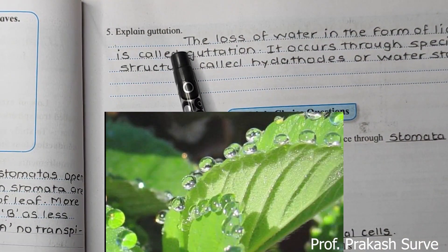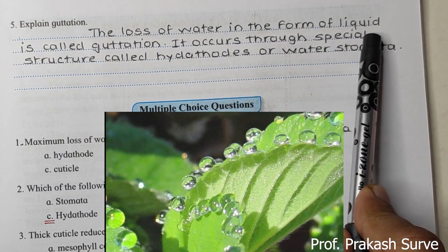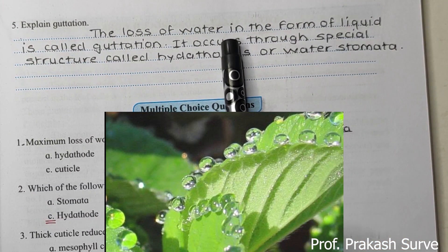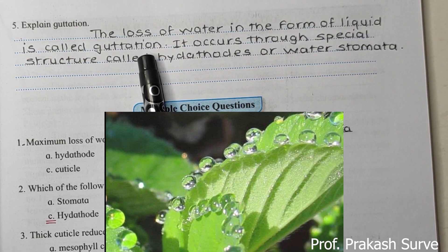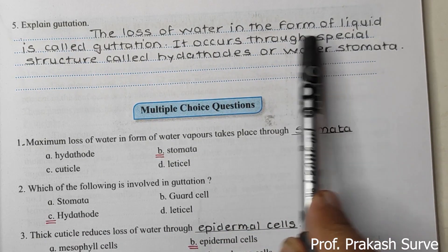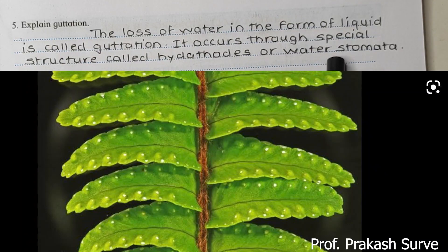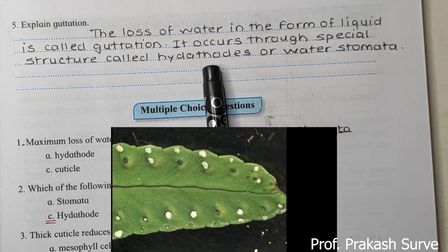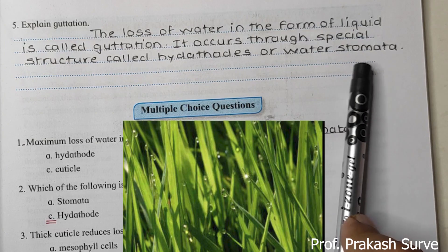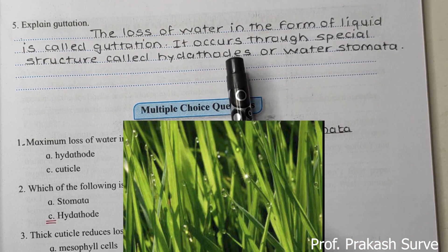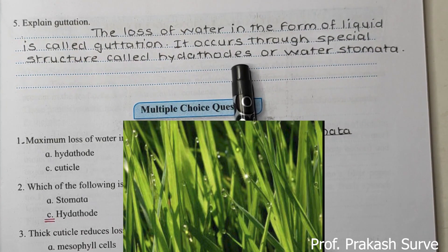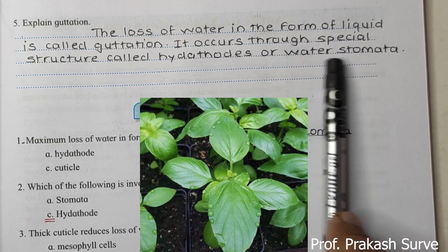What is guttation? Loss of water in the form of liquid is called guttation. It occurs through special structures called hydathodes or water stomata. Hydathodes can be observed on fern leaflets and pinnets. Water stomatas are observed on most grasses — the small droplets seen on grass leaves in the morning are because of water stomatas.